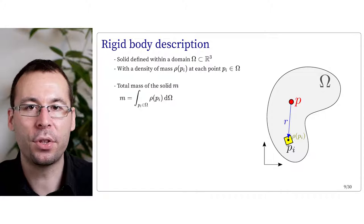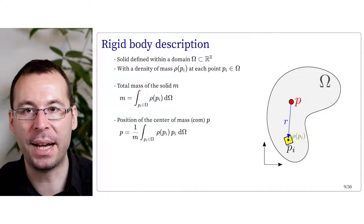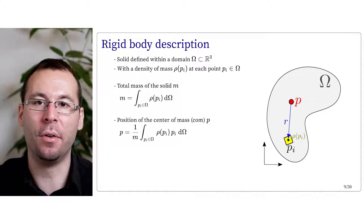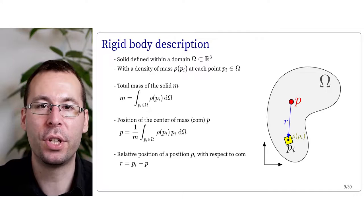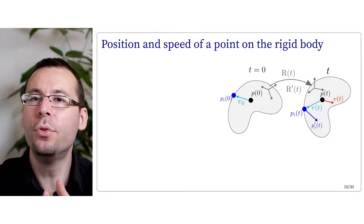We can define the total mass of the solid M, which is the integral over all the points Pi of the density rho. We can also define the position of the center of mass, the CoM, called Pi, which equals 1 over the total mass times the integral of the density rho of Pi times the position Pi. We also introduce the notation R describing a relative position of the body with respect to the center of mass, with R equals Pi minus P. A new level of complexity brought by the solid is that it has fundamentally an orientation.